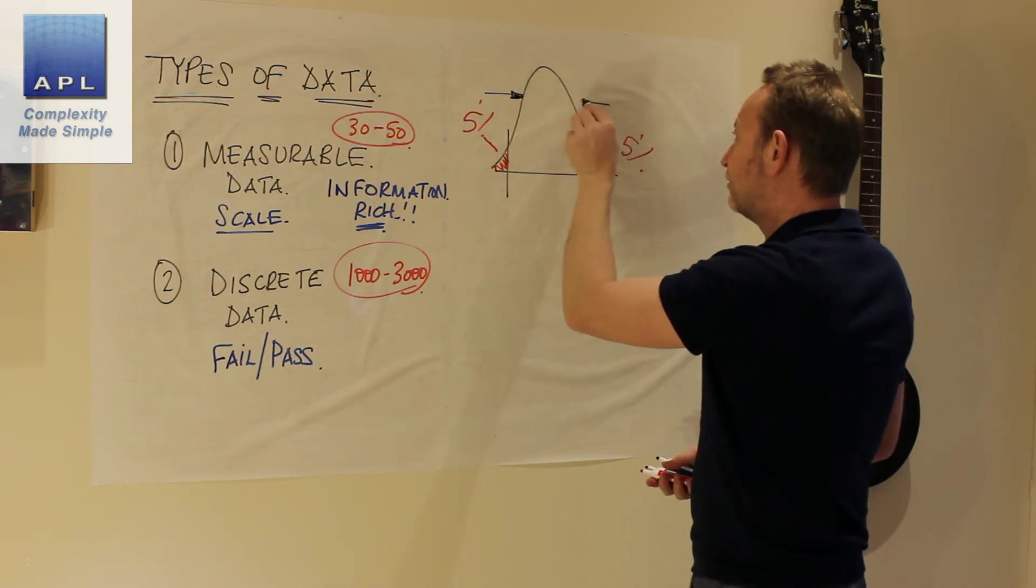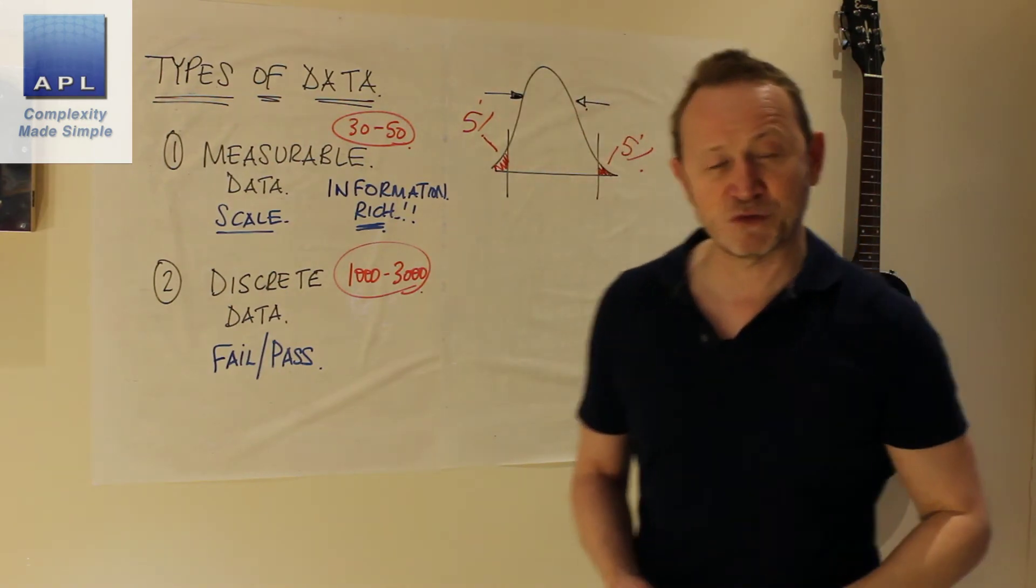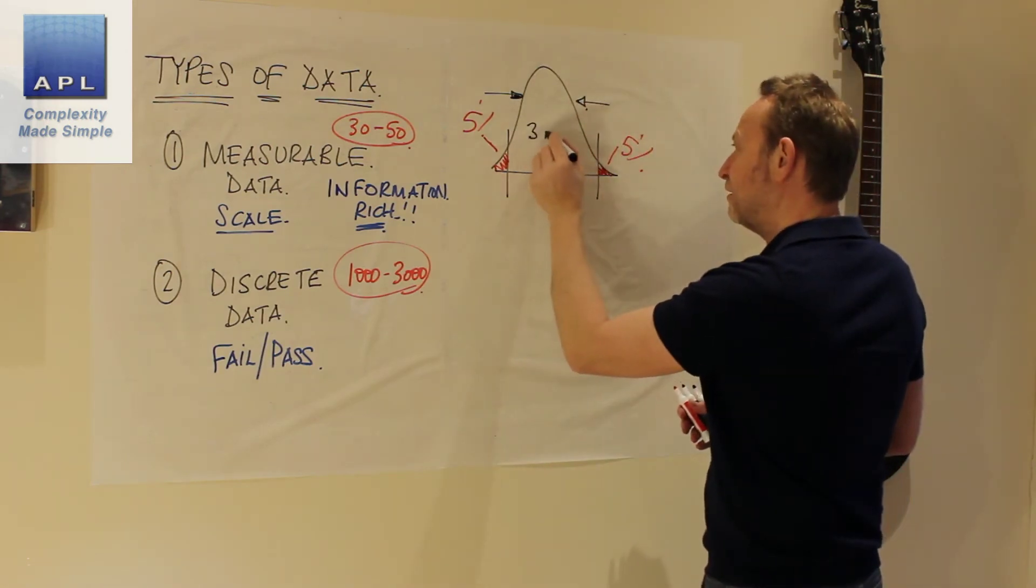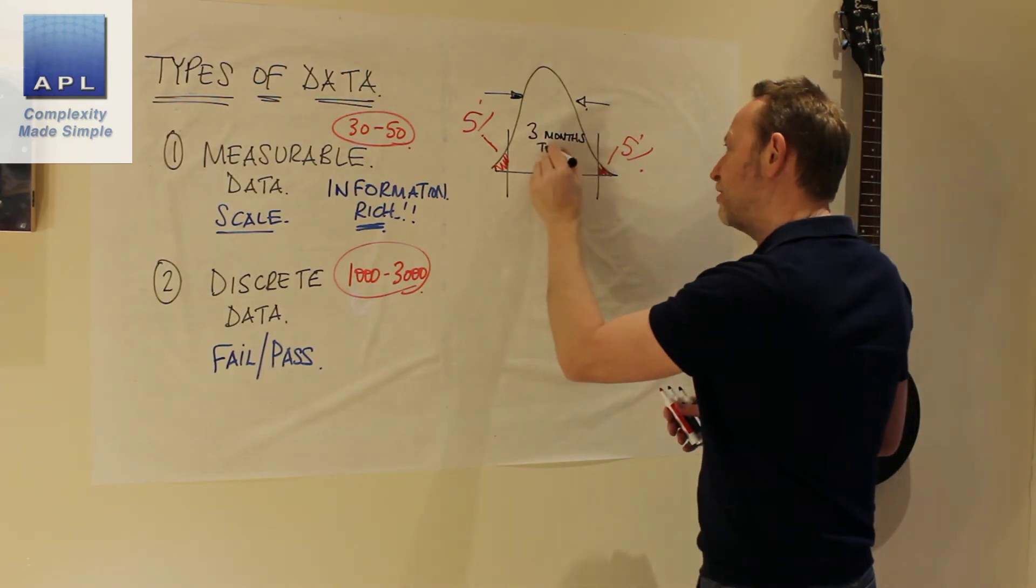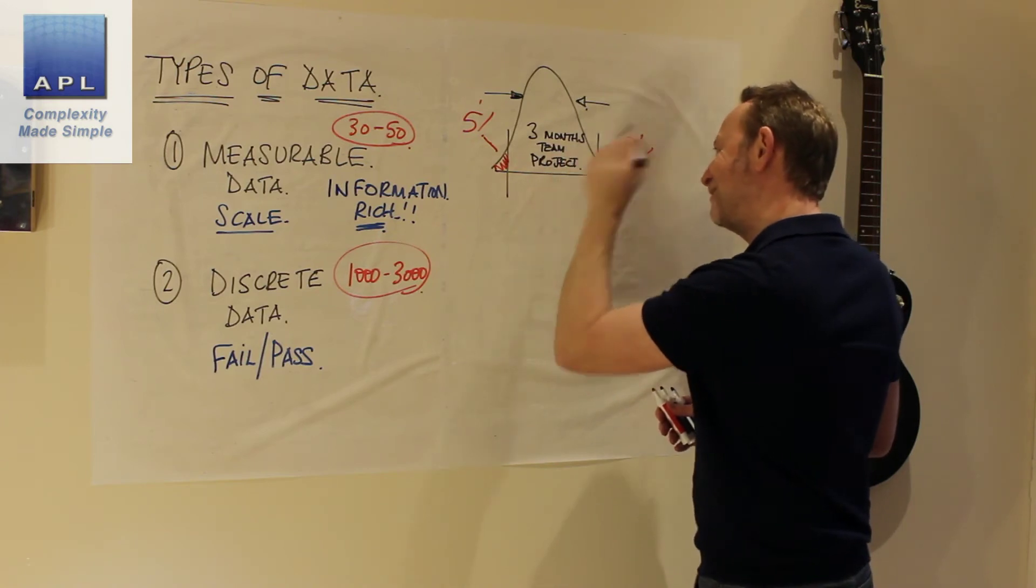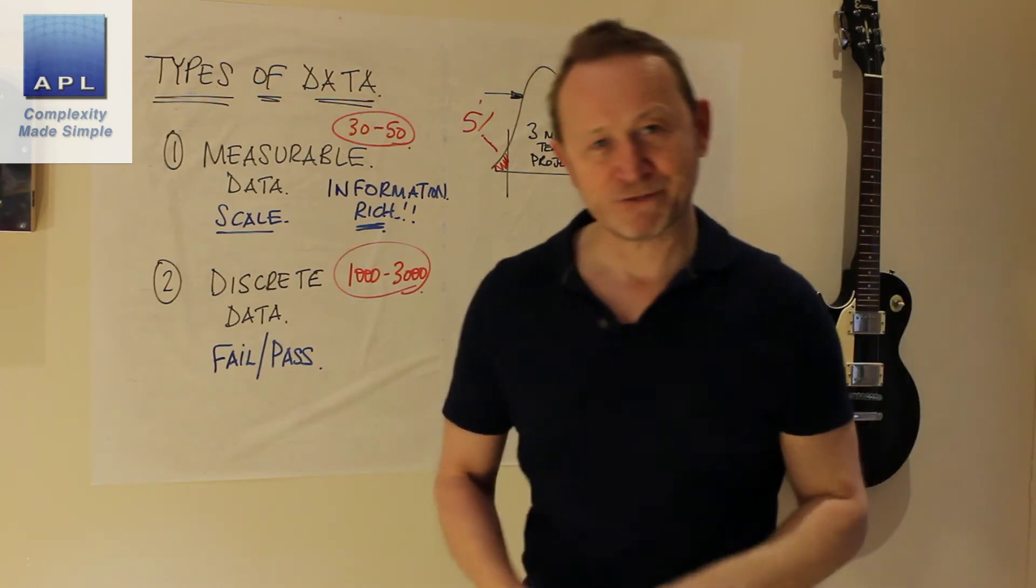Well, this is a problem with noise. You have to squeeze that distribution in. If you have this problem, typically it's going to take three months to fix that. You're going to need a team, and it's going to take a project, probably a Six Sigma project.